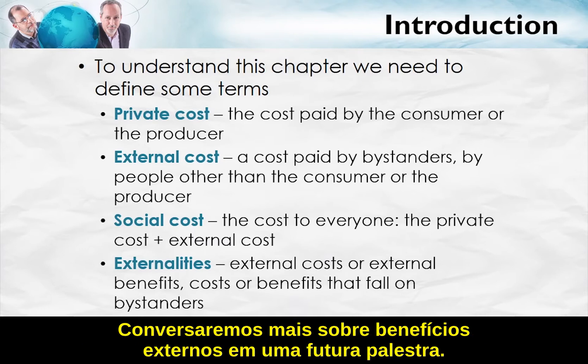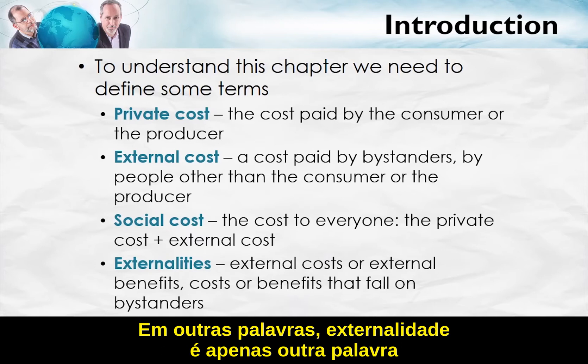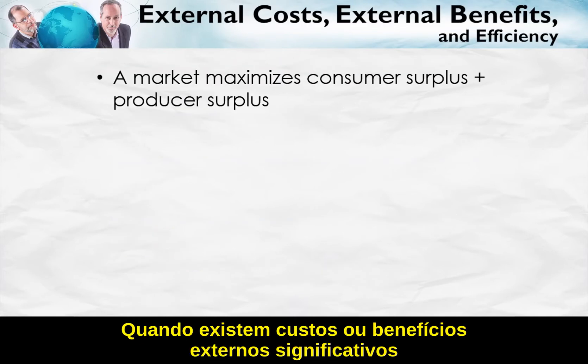Externalities is simply another word for external costs or external benefits — it's just another word for costs or benefits that fall on bystanders. When there are significant external costs or external benefits, a market will not maximize social surplus.